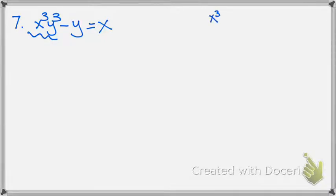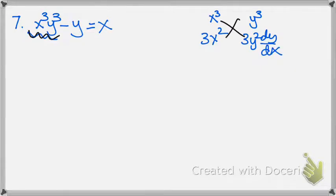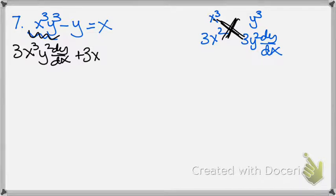I have an x cubed and a y cubed. Find their two derivatives, 3x squared and 3y squared dy dx, and crisscross. So just this piece is 3x cubed y squared dy dx, plus 3x squared y cubed.